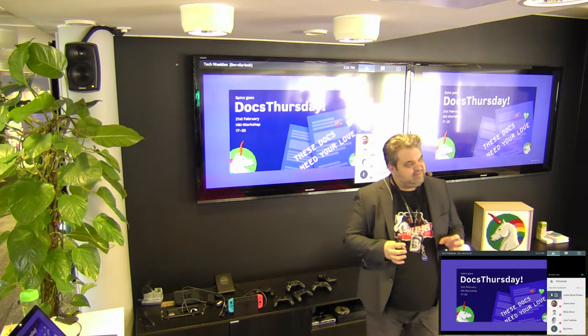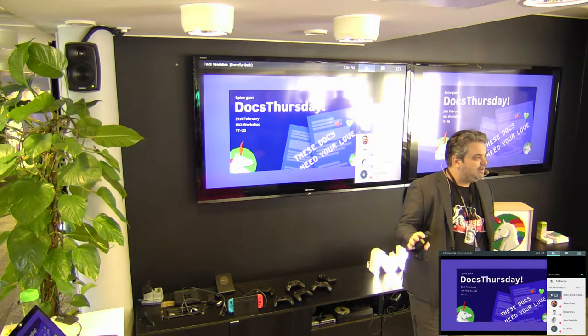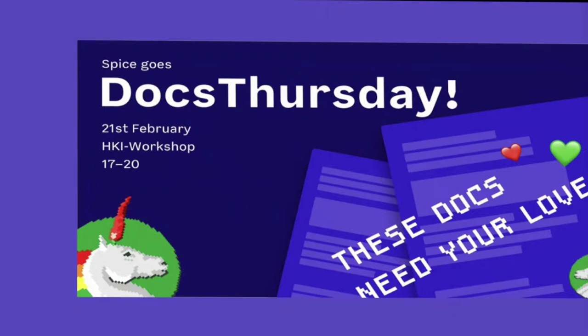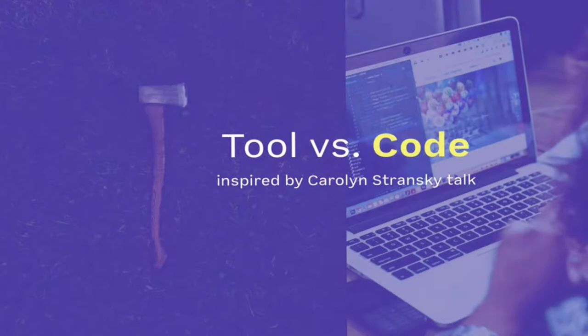This is kind of a remix of a talk I gave at Docs Thursday. We had a couple of events where we worked on open source software, and I kind of recreated it for a different format. It's a really fun thing where you just get together, kind of like Taco Tuesday, but you work on open source documentation. A lot of what I'm going to talk about is based on different talks and articles I read about technical writers as well as developers — how can we create better documentation?